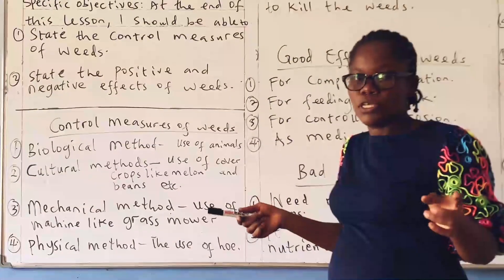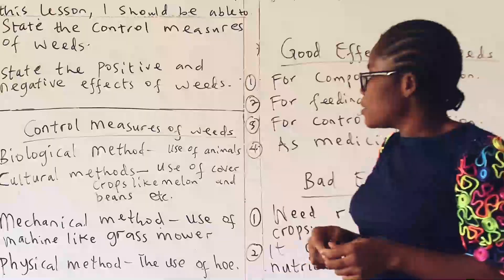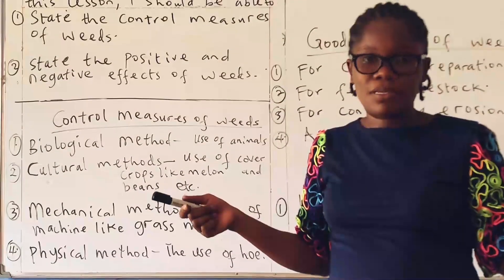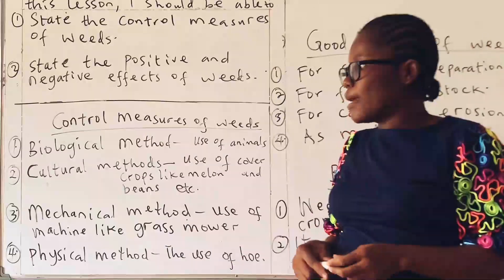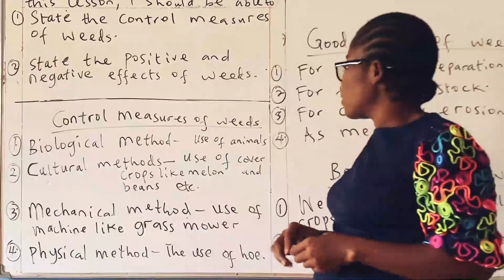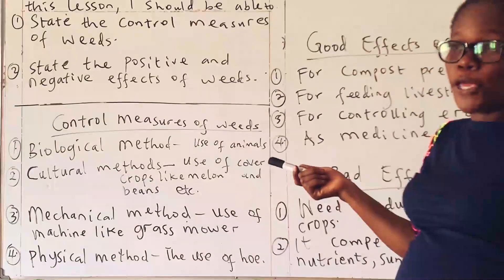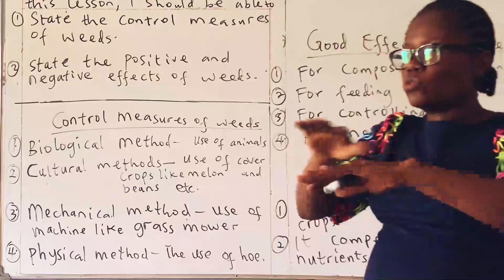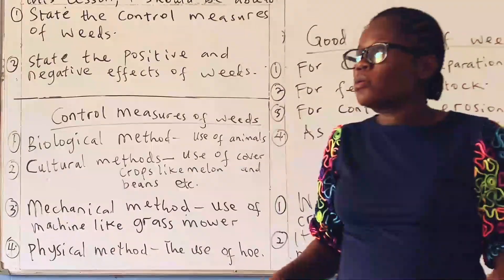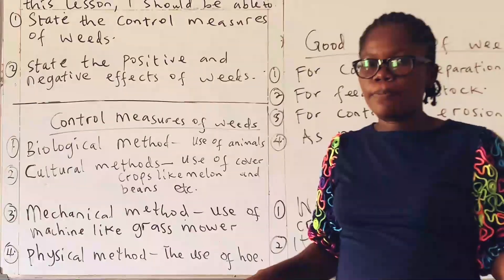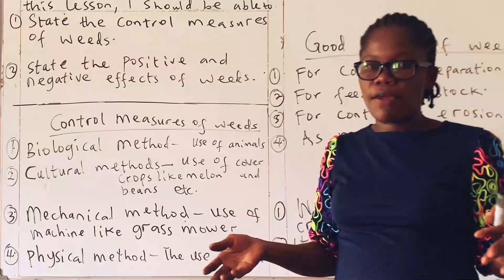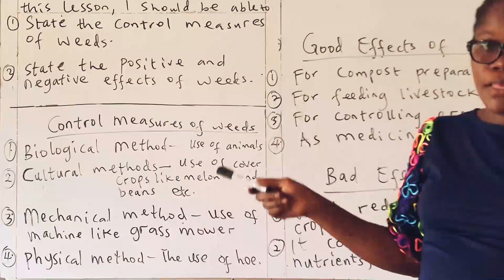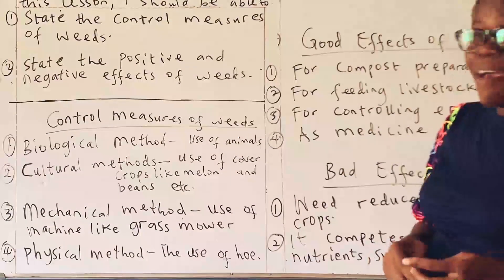The second method is the cultural method — simply the use of certain farm practices in order to control weeds. Example, the planting of cover crops. Examples of cover crops include melon and beans. When they grow, they will cover the surface of the soil in order to suppress the weeds. They will not allow the weed to grow very fast, so they suppress the growth of the weeds.